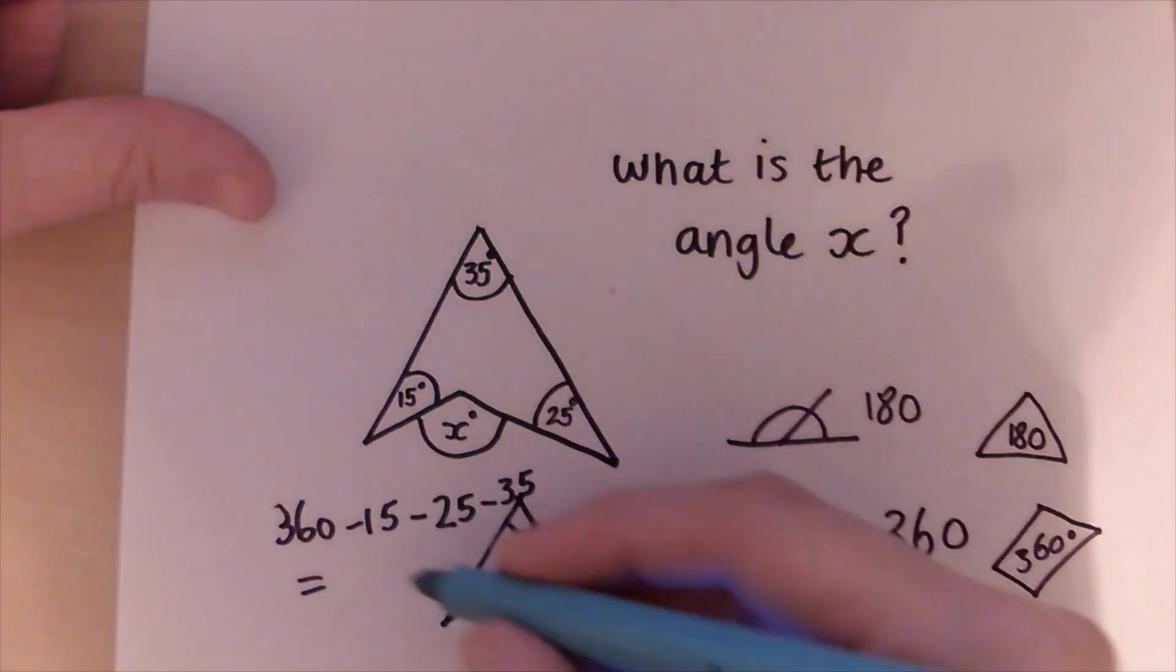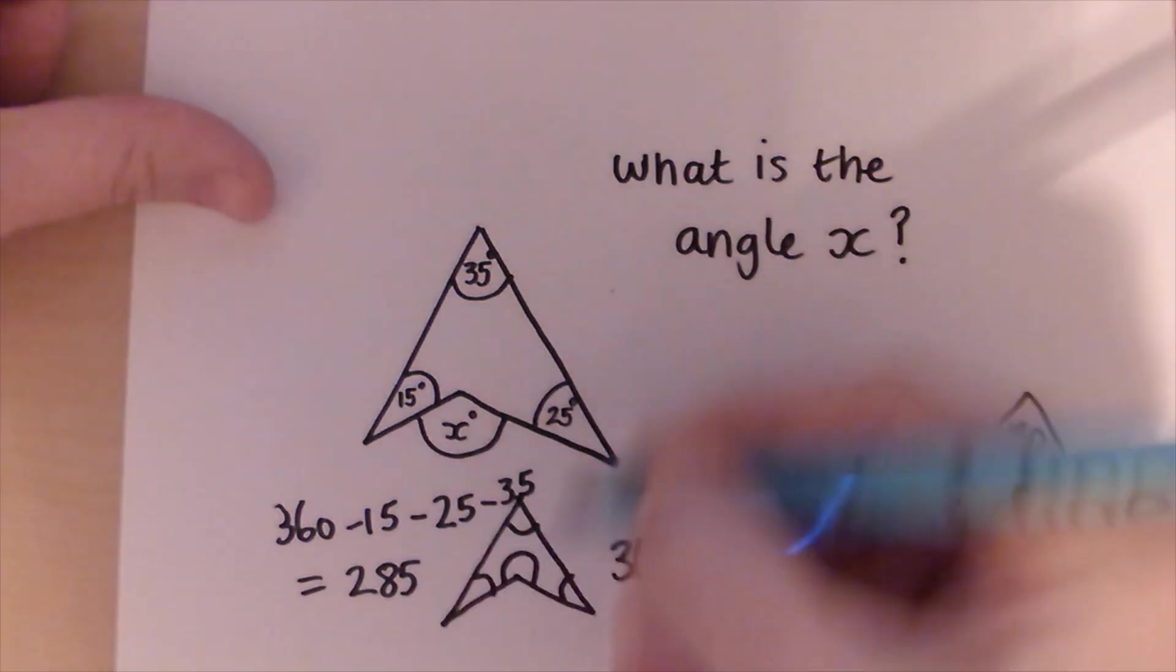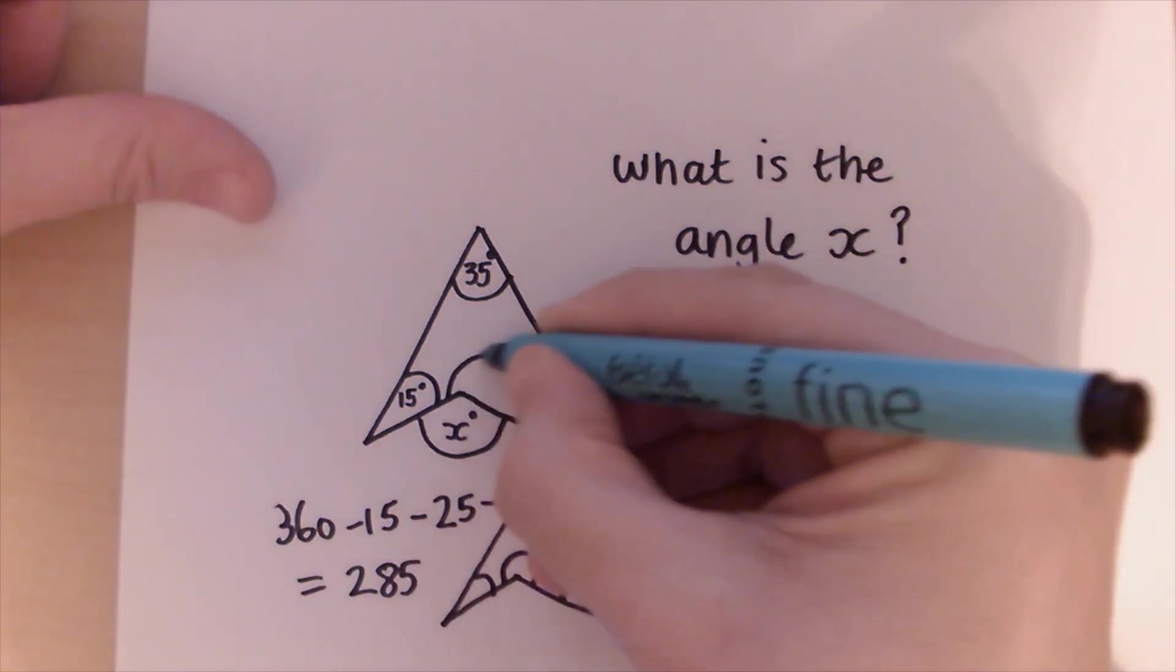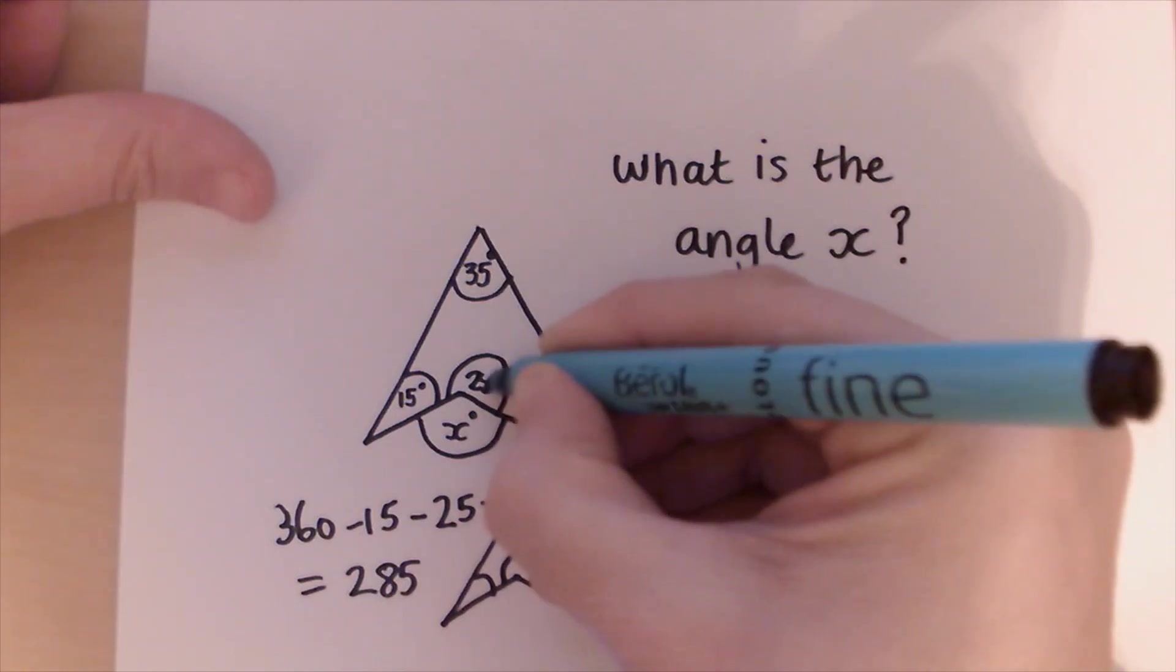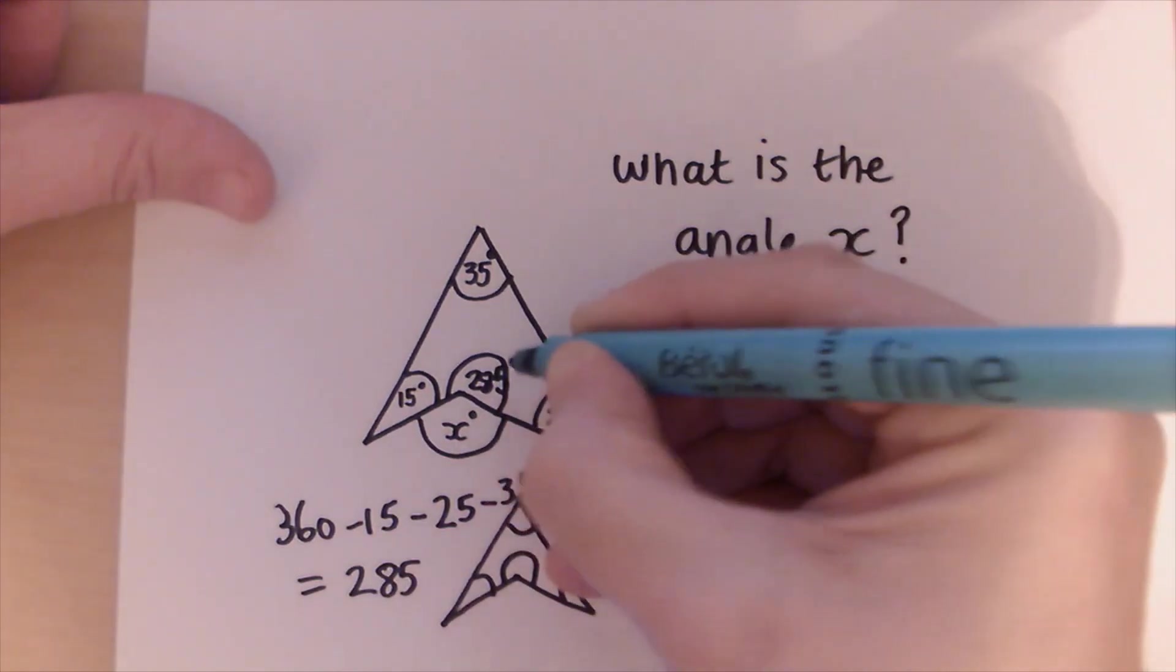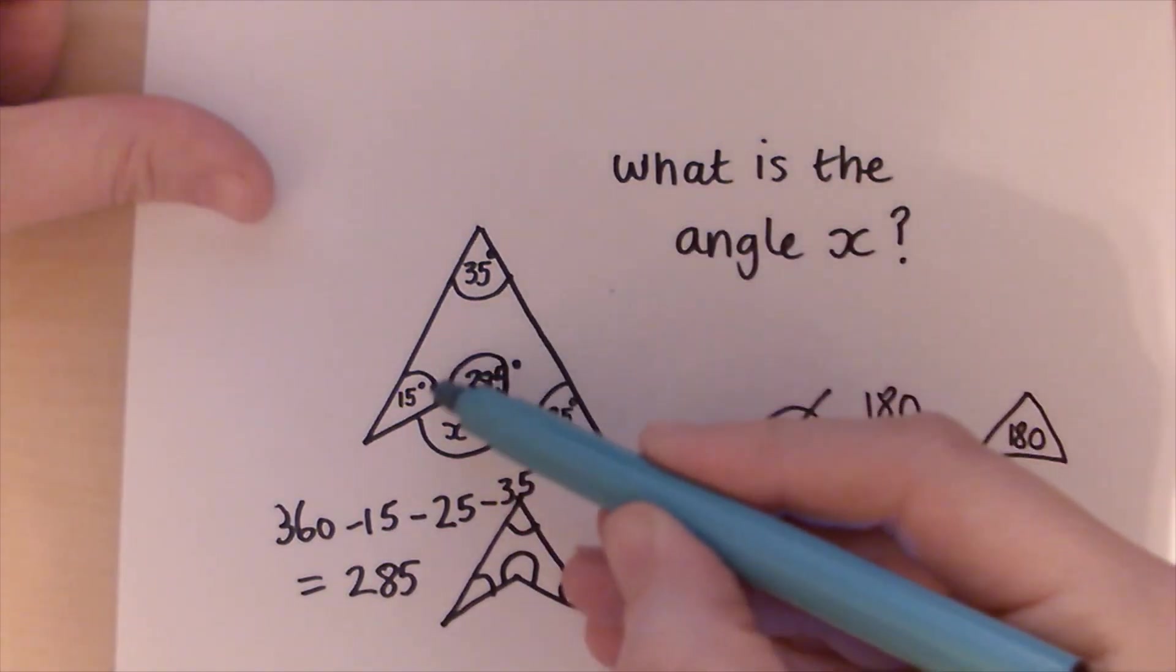And this answer leaves you with 285. So I now know that this angle here inside must equal 285 degrees. And what was the other angle fact we knew?